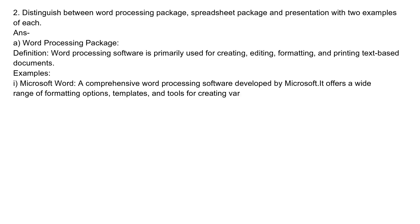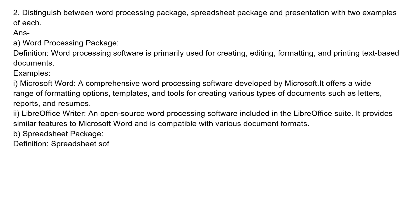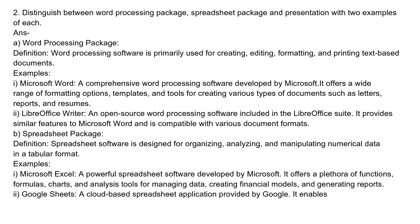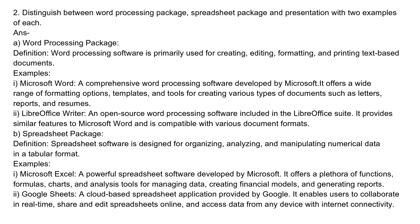Two: Distinguish between word processing package, spreadsheet package, and presentation software with two examples each. A: Word Processing Package — definition: word processing software is primarily used for creating, editing, formatting, and printing text-based documents. Examples: i) Microsoft Word — a comprehensive word processing software developed by Microsoft offering a wide range of formatting options, templates, and tools for creating documents such as letters, reports, and resumes. ii) LibreOffice Writer — an open-source word processing software included in the LibreOffice suite, compatible with various document formats.